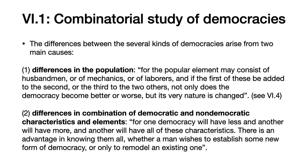Why are there differences between kinds of democracies? Aristotle says there are basically two causes. First is differences in the population: the popular element may consist of husbandmen — farmers — or of mechanics, or of laborers. If the first of these be added to the second or the third to the two others, not only does the democracy become better or worse, but its very nature is changed. So a democracy consisting only of farmers will be of one quality; one that includes artisans and manual laborers could be compared as having a different nature, one better or worse.